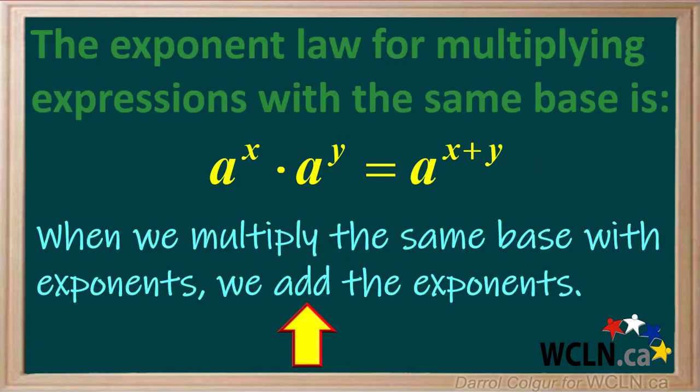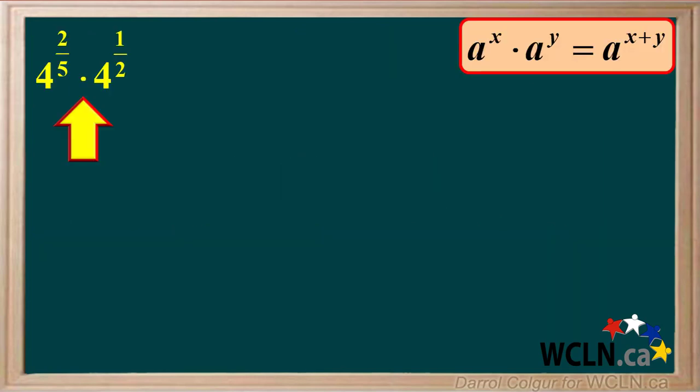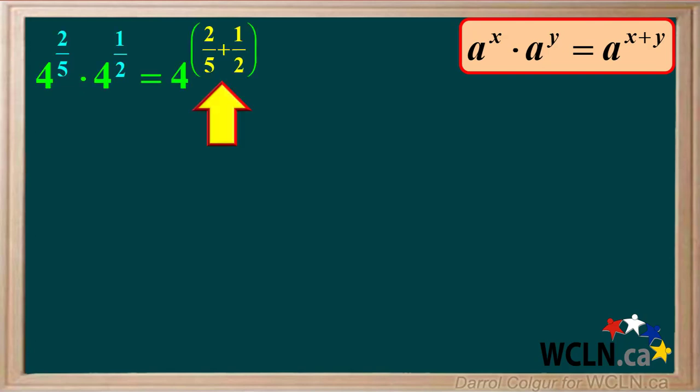In other words, when we multiply the same base with exponents, we add the exponents. Let's multiply the same base with fractional exponents. We have 4 to the power of 2 fifths times 4 to the power of 1 half. We add the exponents to give us 4 to the power of 2 fifths plus 1 half.